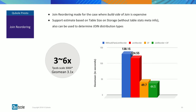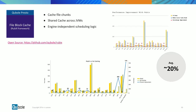Join reordering leverages table statistics to determine which table is larger and which is smaller, placing the smaller one on the right side. We also added logic for tables without statistics — we estimate size based on the table file size in storage. We also determine the join distribution type: hash join or broadcast join, whichever is more efficient. After enabling both dynamic filtering and join reordering in our distribution, we've seen significant performance improvements.